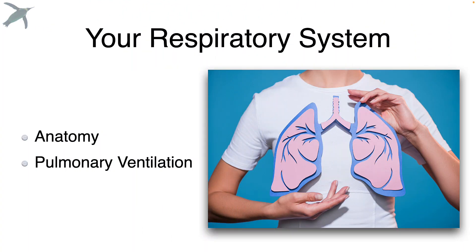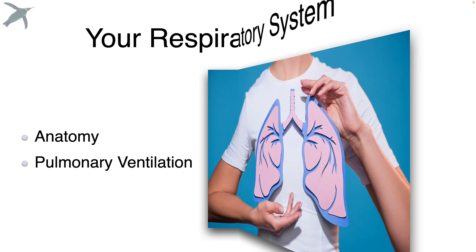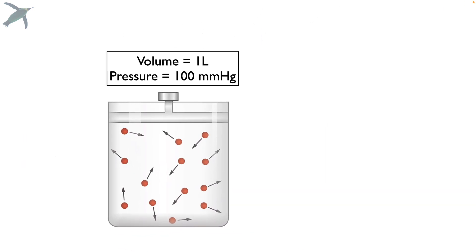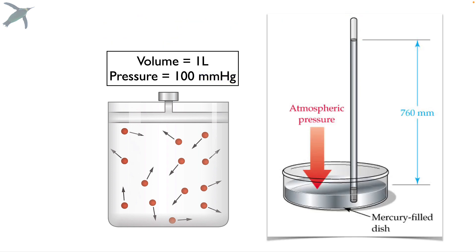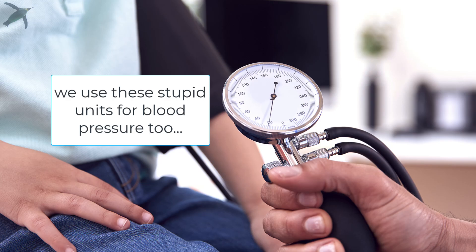Let's talk about getting air into and out of the lungs. Imagine a container with air molecules inside — as they bounce around, they exert a force on the walls of the container, which we measure in millimeters of mercury. It's a unit having to do with the pressure that would push a column of mercury up a certain height — it's lame, but in medicine, that's the pressure unit we use.